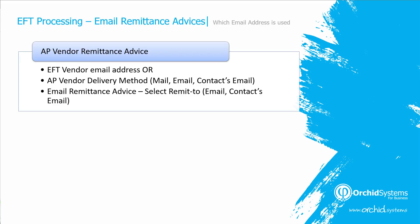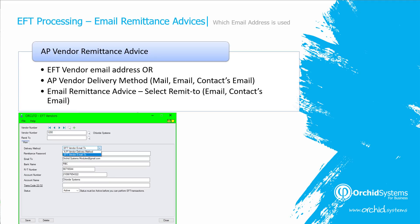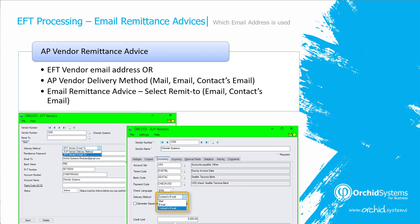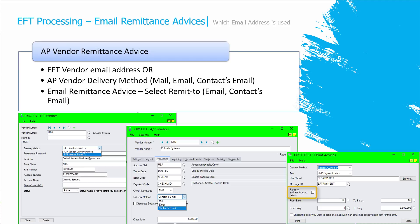When sending AP vendor remittance advices, the print advice program first looks at the EFT vendor to see if you specified to use the EFT vendor email address or to use the AP vendor delivery method — which can be mail, email, or contacts email. On the EFT vendor, you can select whether to use the EFT vendor email-to address, in which case it uses the email-to on that record. Otherwise, if you select the AP vendor delivery method, it will check in the AP vendor whether to use mail, email, or contacts email. At runtime, if you select remittance address and contact details, it would use the remittance email or contacts email if the EFT vendor's delivery method was set to AP vendor delivery method. This option is selected on the EFT print advices.